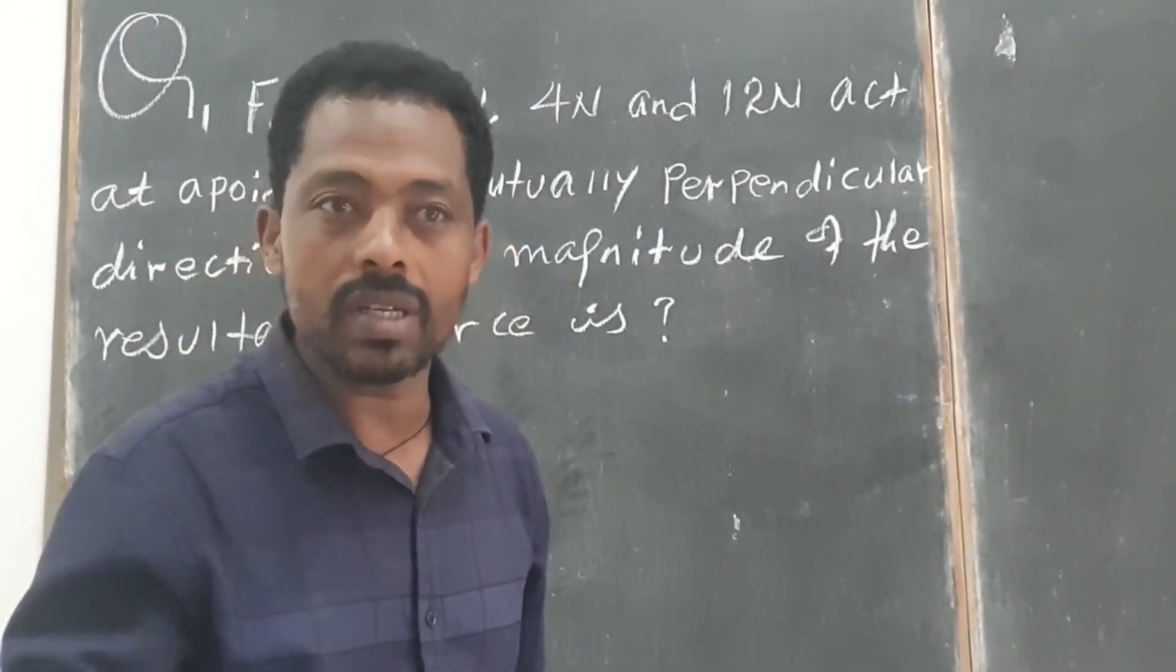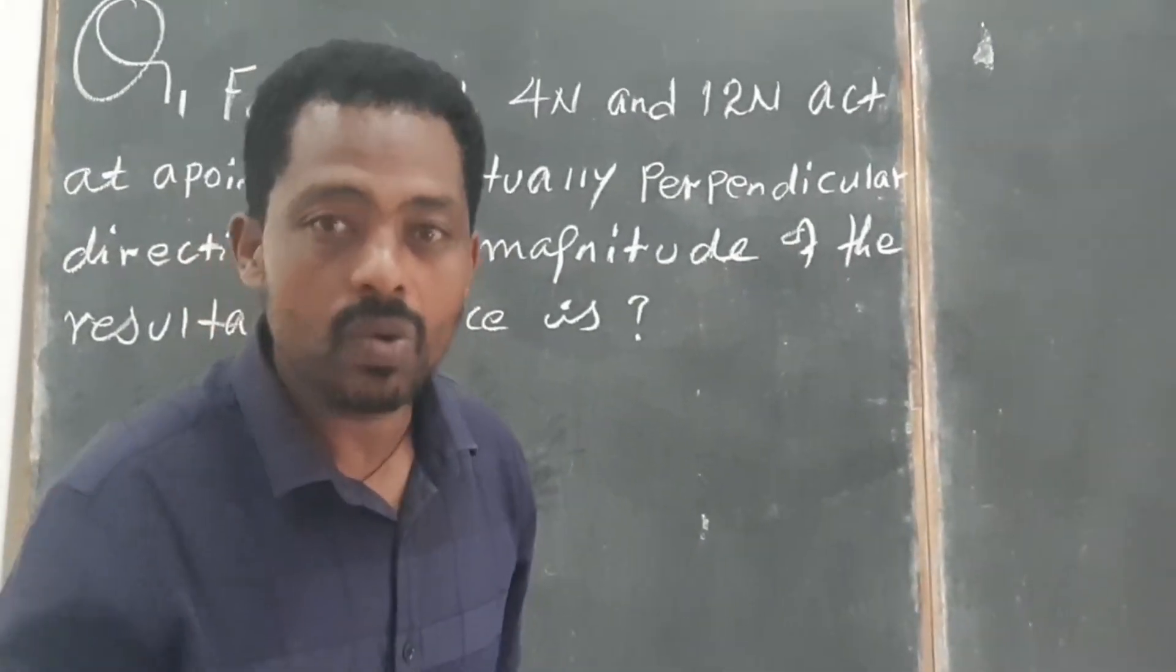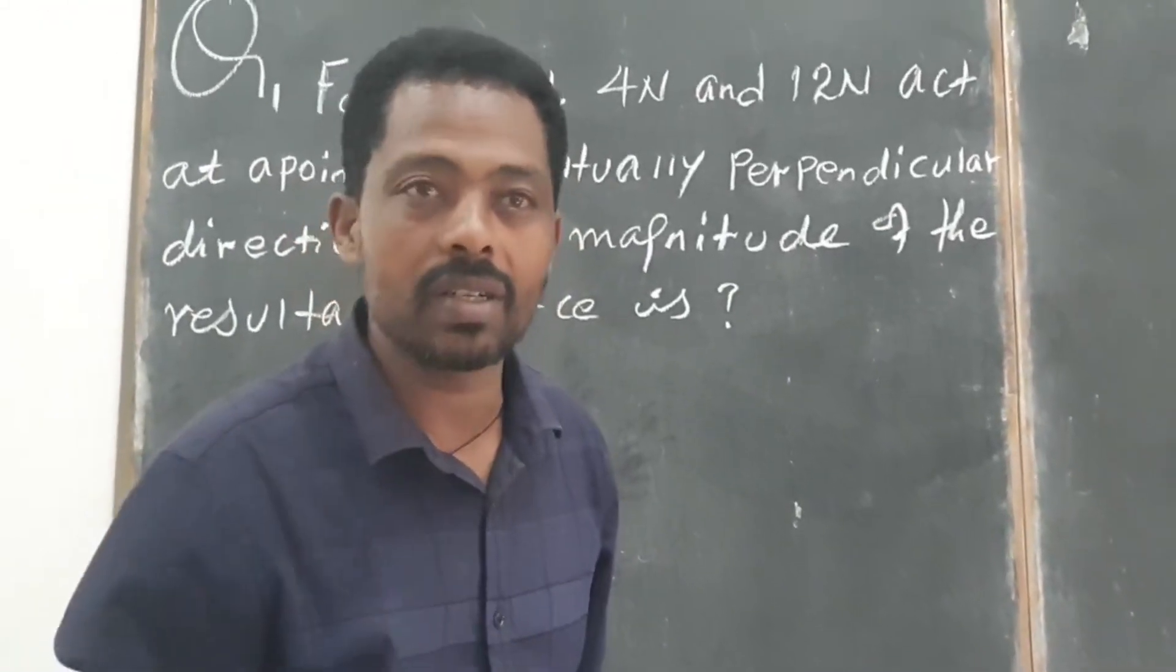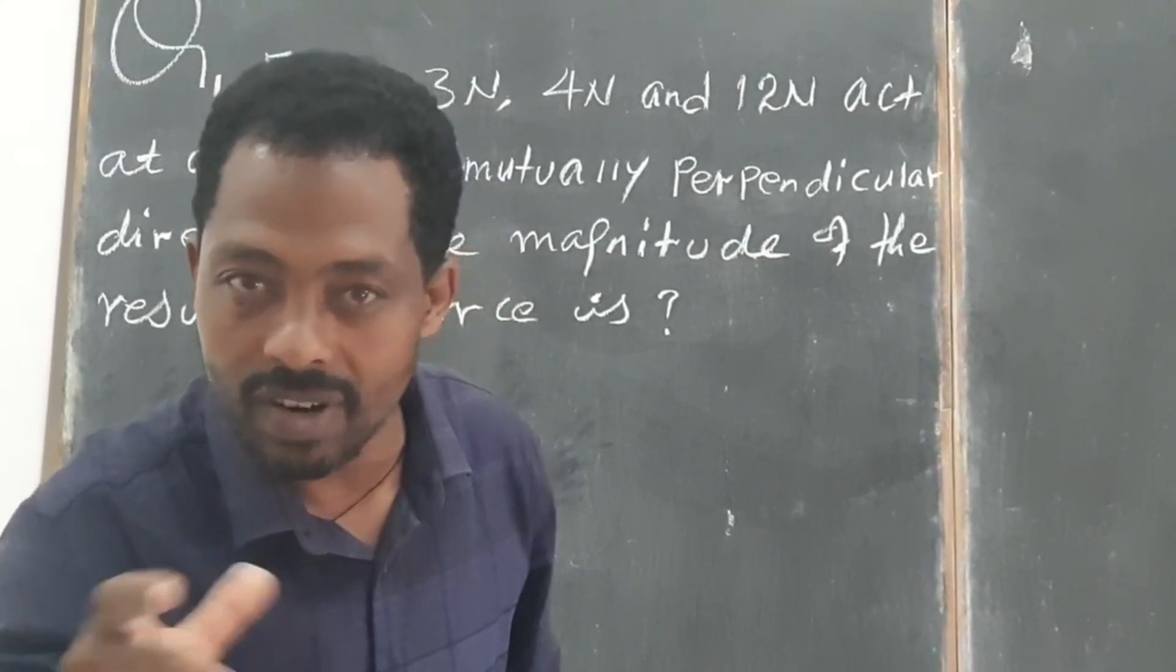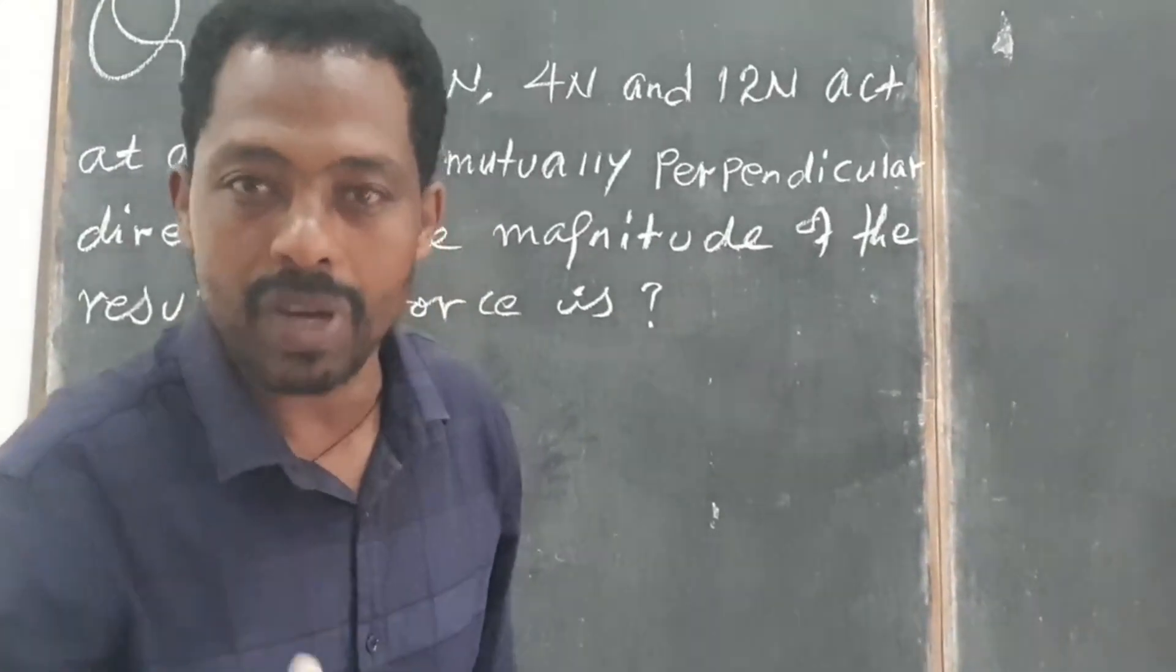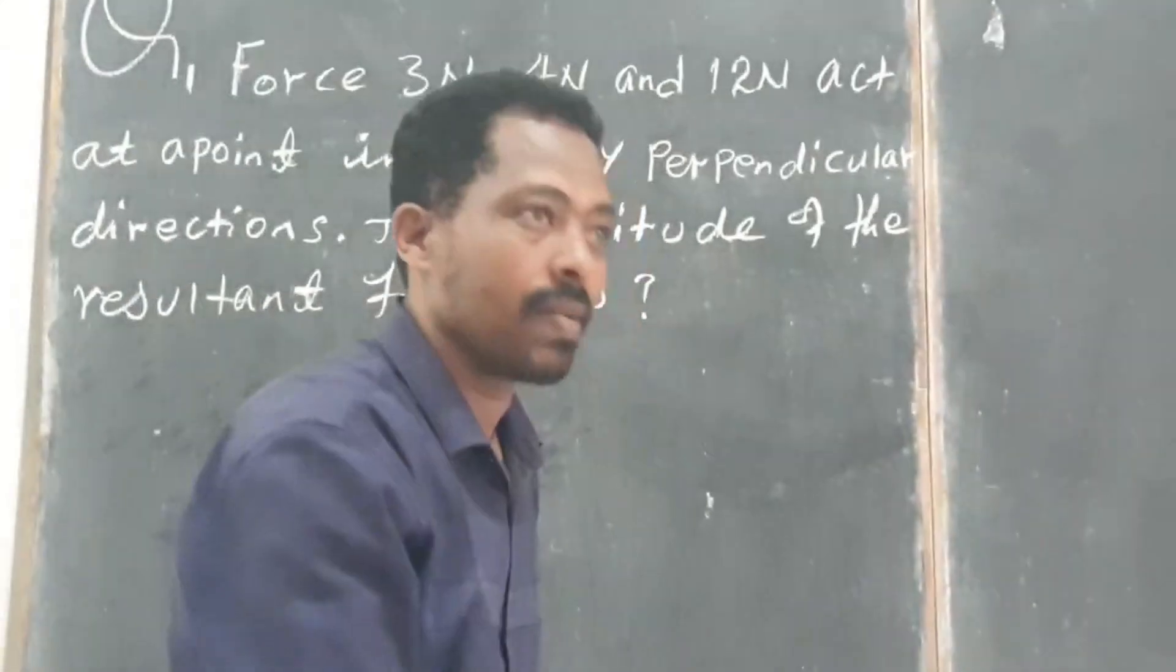And then another one is the weak nuclear force, which is very important to turn a proton into neutron and vice versa through the beta decay process.